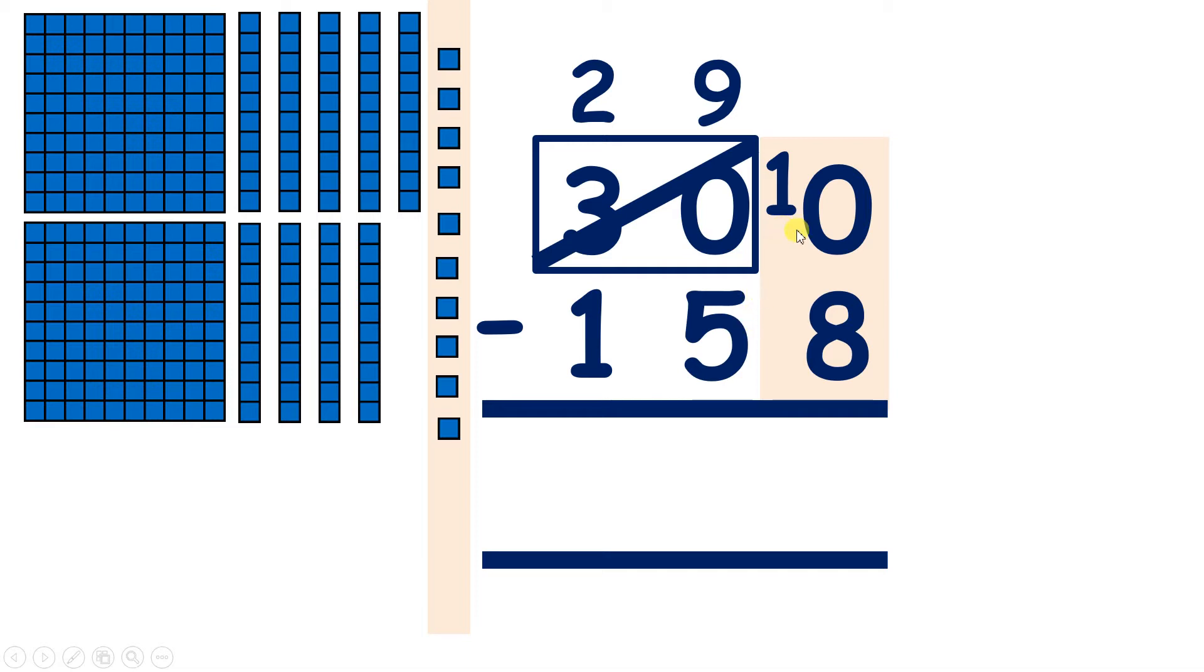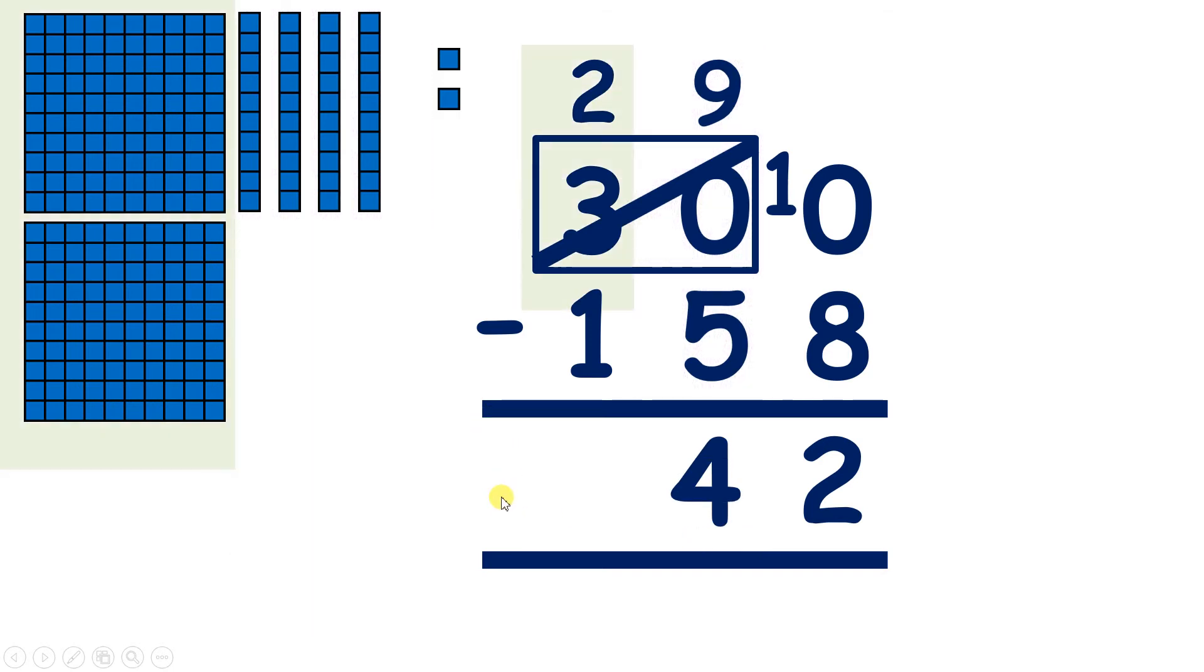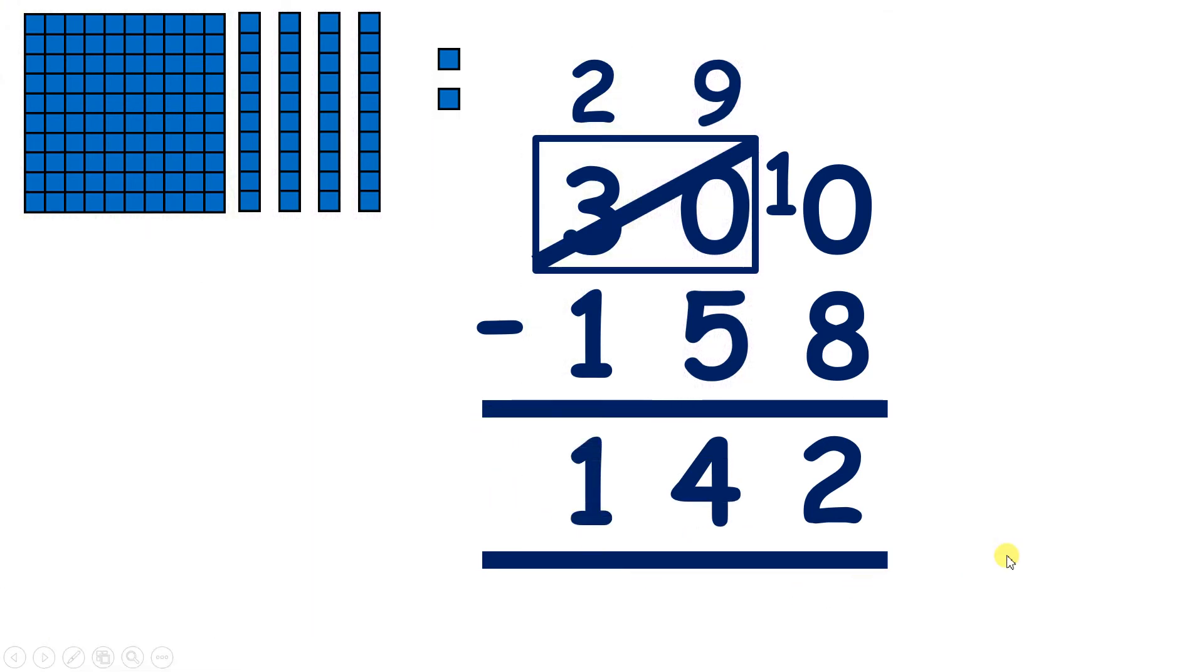So then we can do the same thing. 10 minus 8 is 2. 9 minus 5 is 4. And 2 minus 1 is 1. So we have 142.